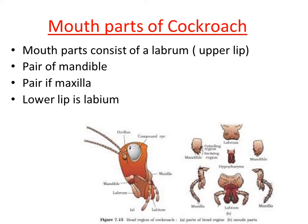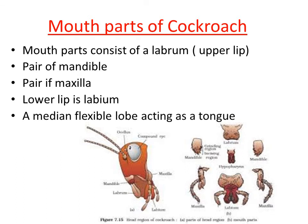The lower lip in the mouth part is named as labium. Within the buccal cavity region there is a small tongue-like structure called hypopharynx. Hypopharynx is the median flexible lobe acting as a tongue. It helps in pushing the food towards the further part of the alimentary canal.